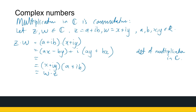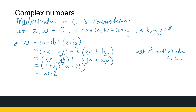Now, what would W times Z look like? W times Z is (X plus iY)(A plus iB), which gives XA minus YB plus i(YA plus XB). Are these two equal? If you look at what happened, this is just commutativity in R — AX equals XA and AY plus BX equals YA plus XB — since multiplication in R is commutative. So yes, Z times W equals W times Z, and multiplication in C is commutative.